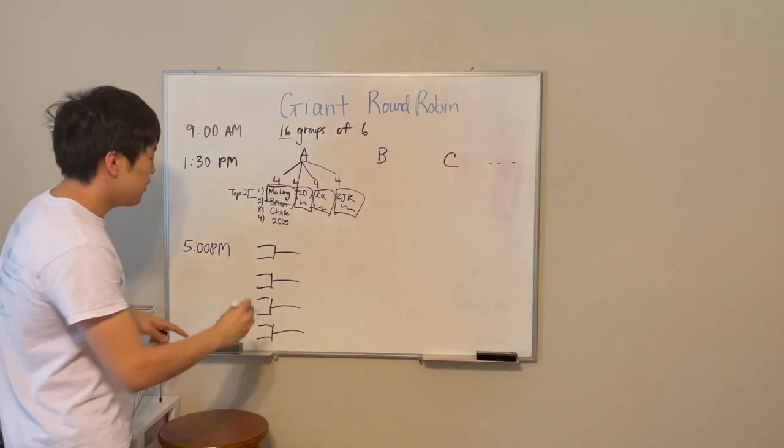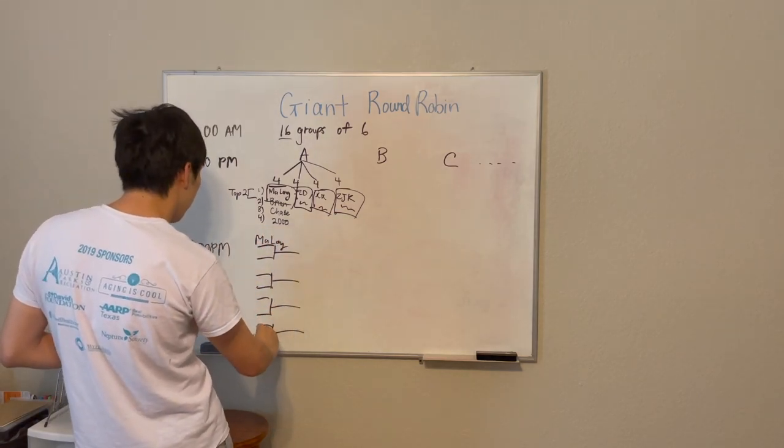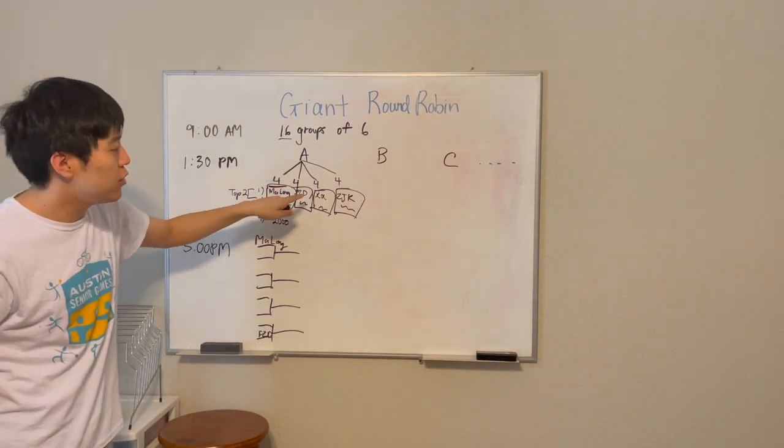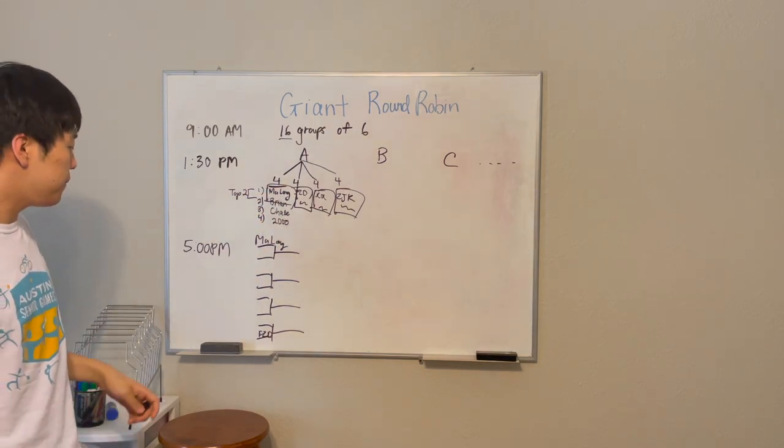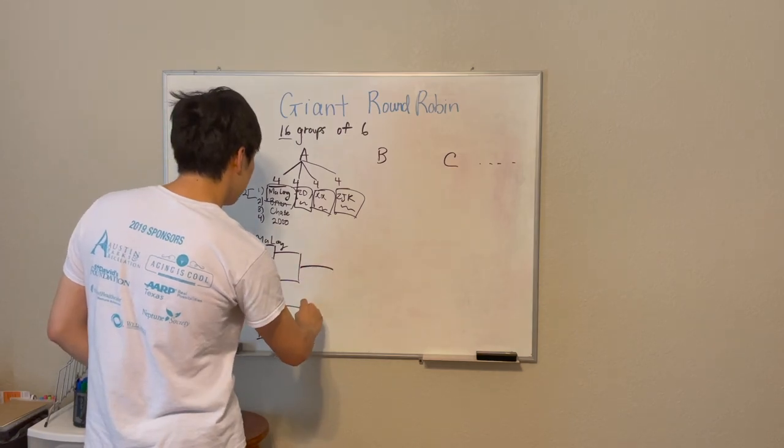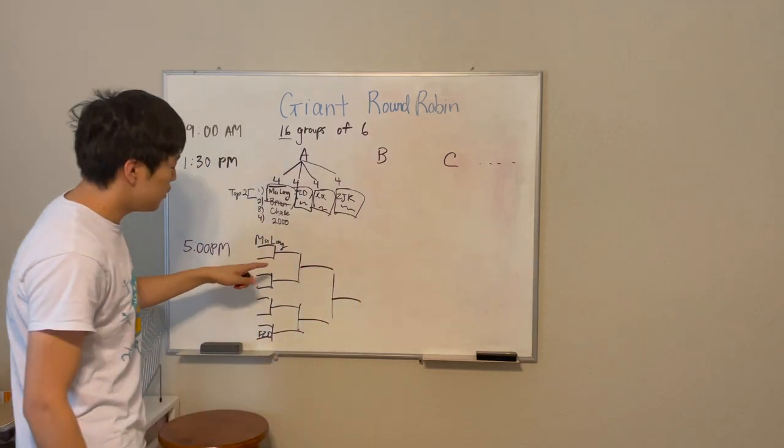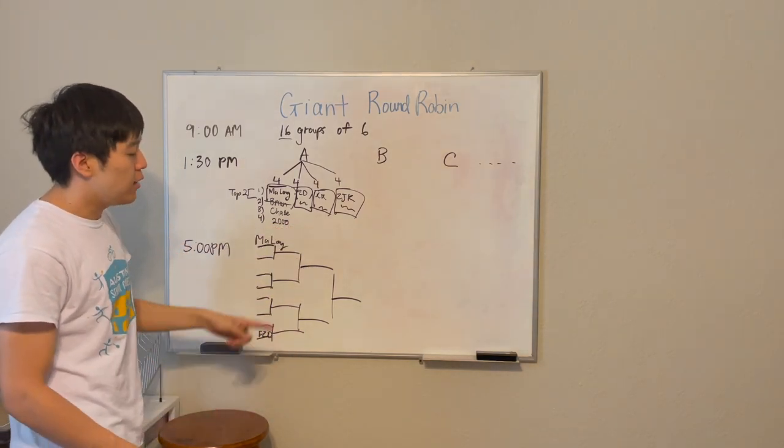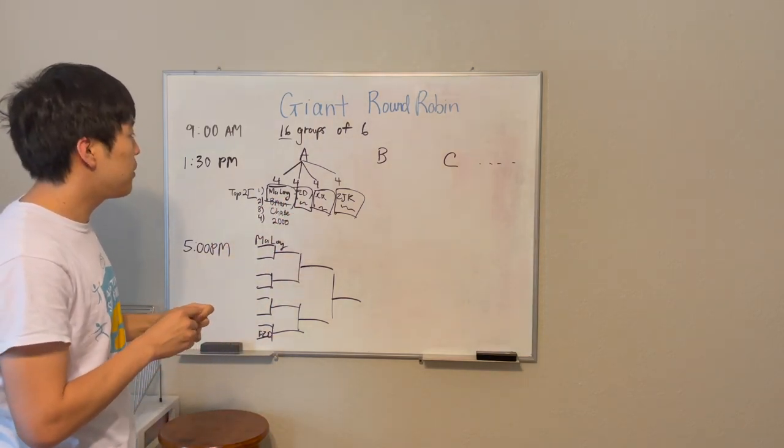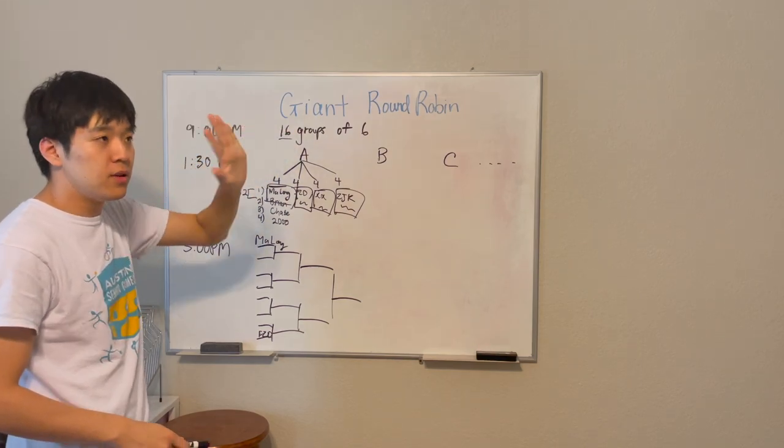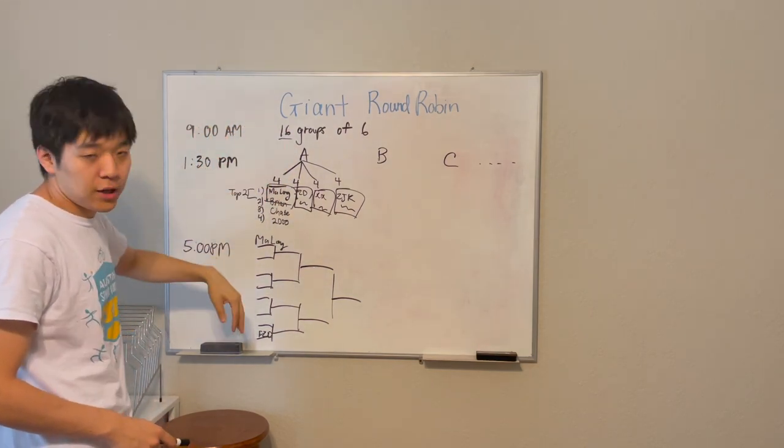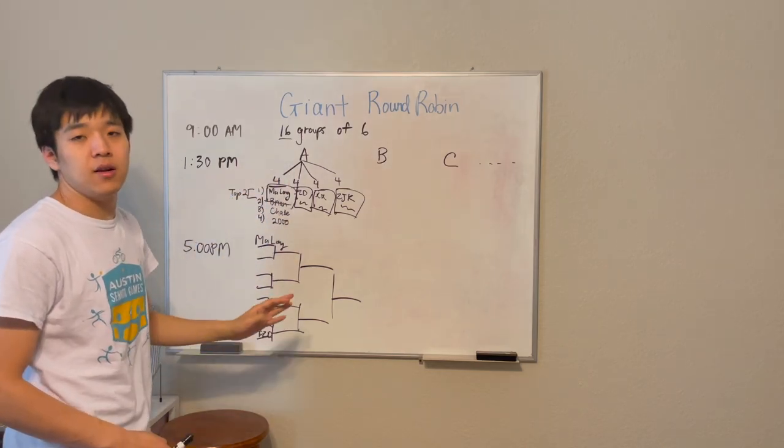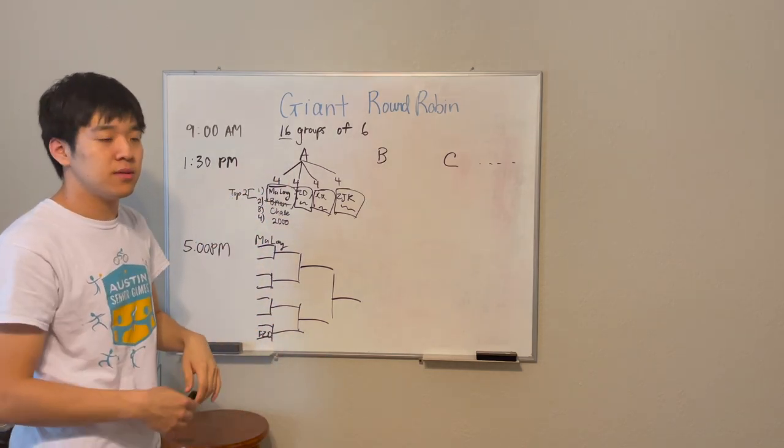Ma Long would go here, Fan Zhendong would probably go here, and so on. There will be eight total advancers since there's two from each of the four groups. This is the quarter-final, this would be the semi-final, this would be the finals, and there will also be a third-fourth place match.